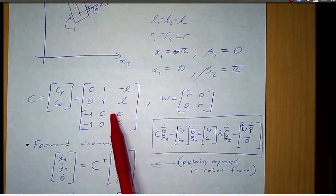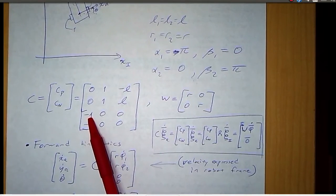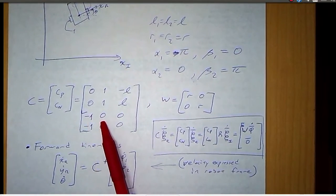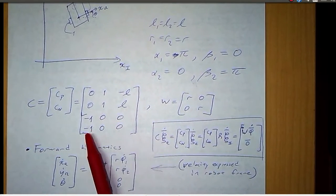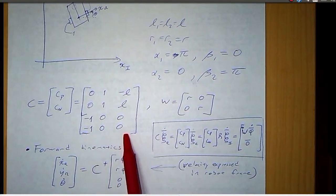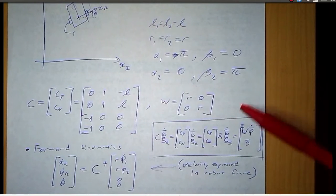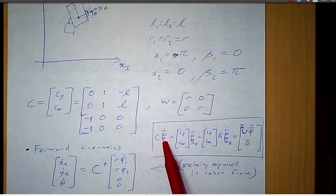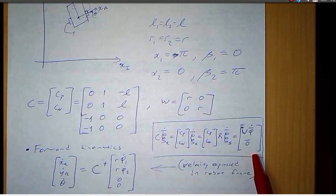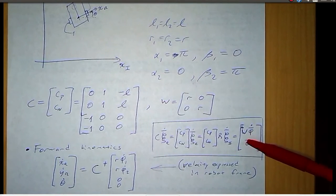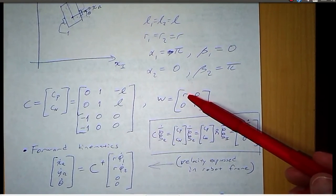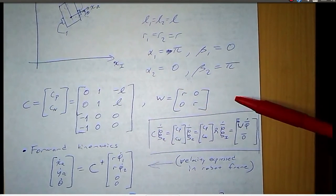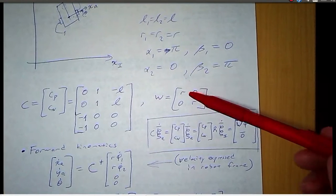For the no-sliding constraint coefficients, we have cosine(alpha one + beta one), sine(alpha one + beta one), and L times sine(beta one). The second row is for wheel two with the same structure. We also need the W matrix. W is just a diagonal matrix made up of the wheel radii. In this case, they're both equal and they're R.